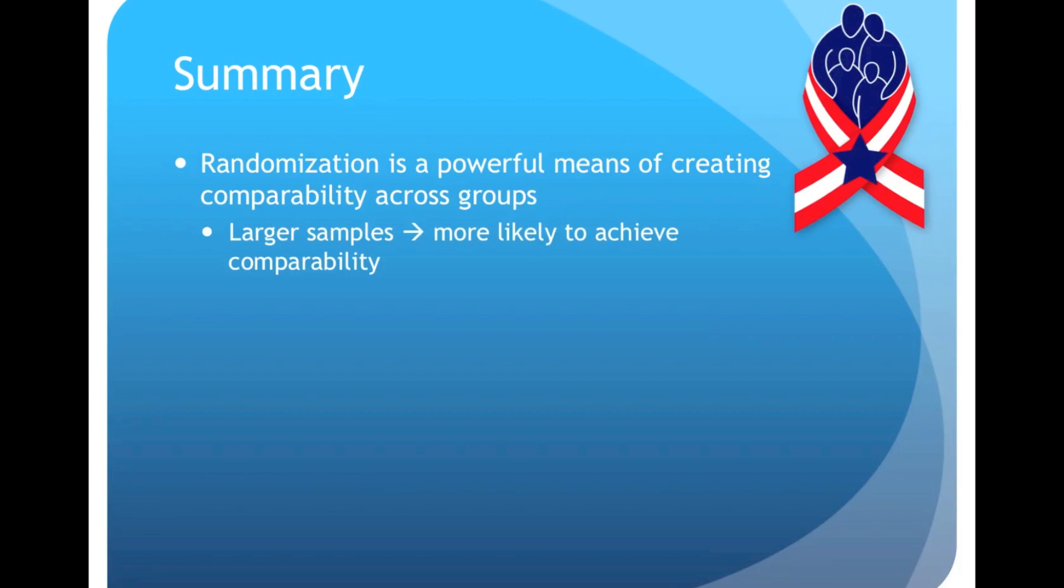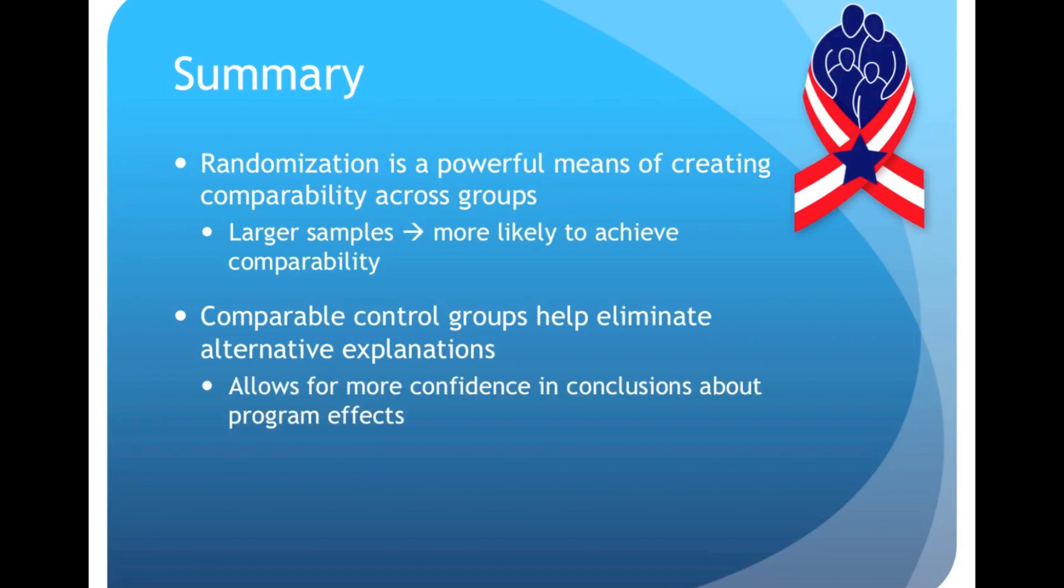So the main point? It's that randomization serves to create comparability across groups, with larger samples more likely to create this comparability, which in turn allows for stronger conclusions about program effects. Because, as we said before, alternative explanations for these observed effects that derive from a lack of group comparability are eliminated. And if you're still not convinced that comparable control groups are necessary, then check out the control groups presentation, or speak with us, because I've run out of time. I want to thank you for stopping by.